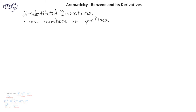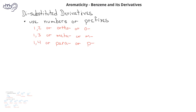We can also have benzene rings with two substituents attached. We can name these either by using numbers, such as 1,2-dibromobenzene, or we could use prefixes to indicate the relative positions of the two substituents. We use the prefix ortho, or simply O in parentheses, if the substituents are in the 1 and 2 positions relative to each other. We use the prefix meta, or M in parentheses, if the two substituents are in the 1 and 3 positions. We use the prefix para, or P in parentheses, if the two substituents are in the 1 and 4th carbon positions relative to each other.